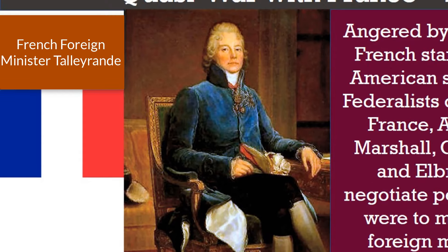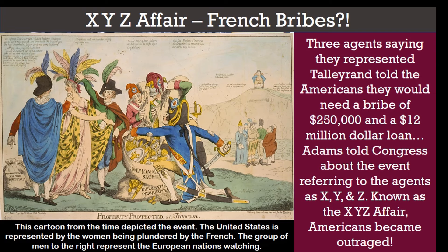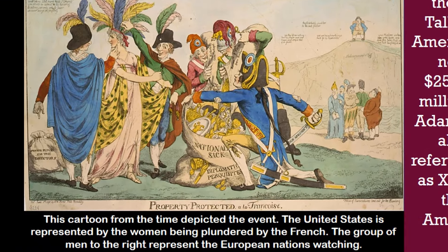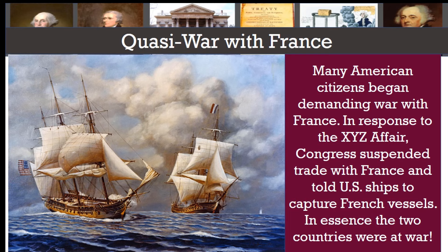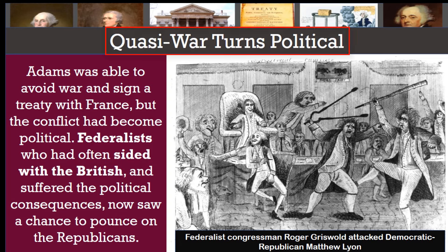Scandal broke out around this mission when three agents claiming to represent Talleyrand told the Americans they would need a bribe of $250,000 and a $12 million loan. Adams told Congress about the event, referring to the agents as X, Y, and Z — and this became known as the XYZ Affair. Americans became outraged. A cartoon from the time depicted the United States represented by a woman being plundered by the French, with European nations watching from the right. Many American citizens began demanding war with France. In response, Congress suspended trade with France and told U.S. ships to capture French vessels. In essence, the two countries were at war — a quasi-war with France.